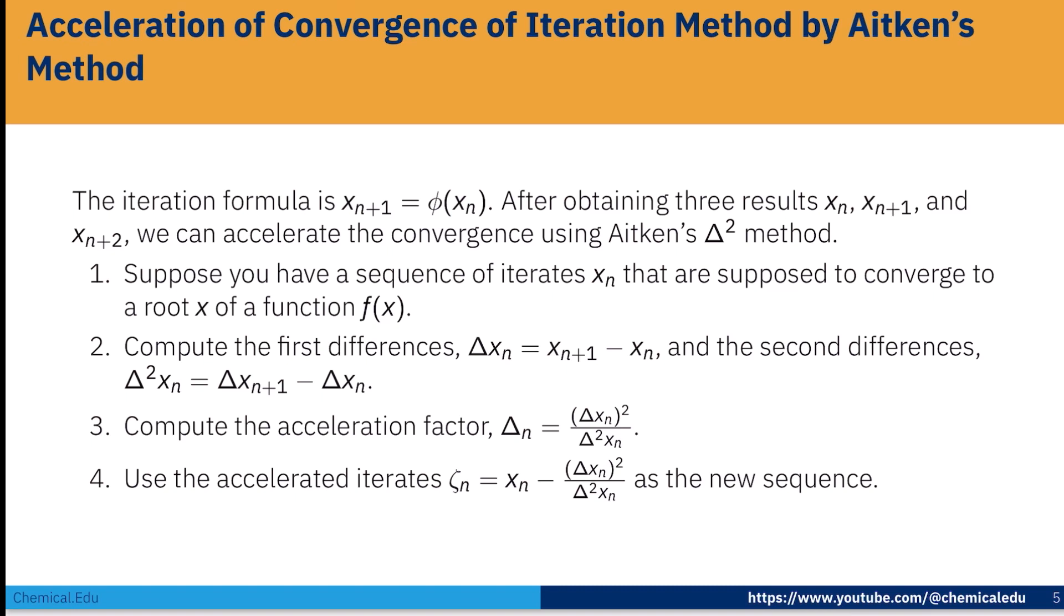Suppose you have a sequence of iterates x_n that are supposed to converge to a root x of function f(x). Compute the first differences, Δx_n = x_{n+1} - x_n, and the second differences, Δ²x_n = Δx_{n+1} - Δx_n. Then compute the acceleration factor Δ_n = (Δx_n)²/Δ²x_n and use the accelerated iterates ζ_n = x_n - (Δx_n)²/Δ²x_n as the new sequence. This is the procedure to find the root of the equation.